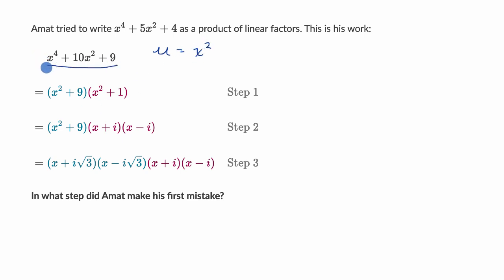...we could rewrite this right over here as u squared plus 10u plus 9. The whole reason why you would do this is so that you could write this higher order expression in terms of a second degree expression. And then we've learned how to factor things like this many times. We say, what two numbers when I add them I get 10, and when I multiply them I get 9? And it would be 9 and 1.